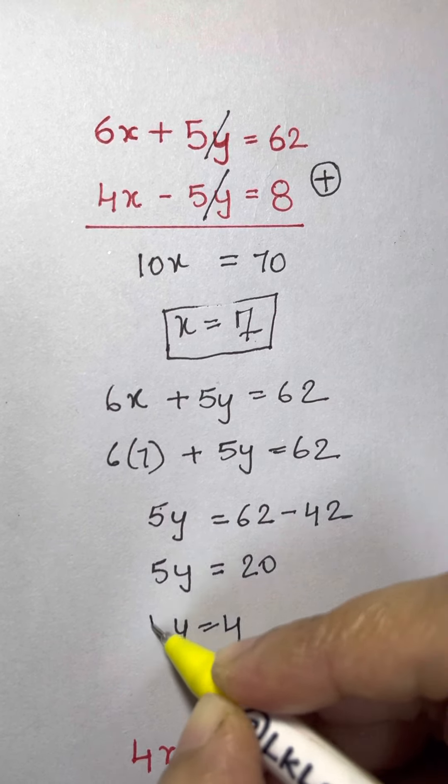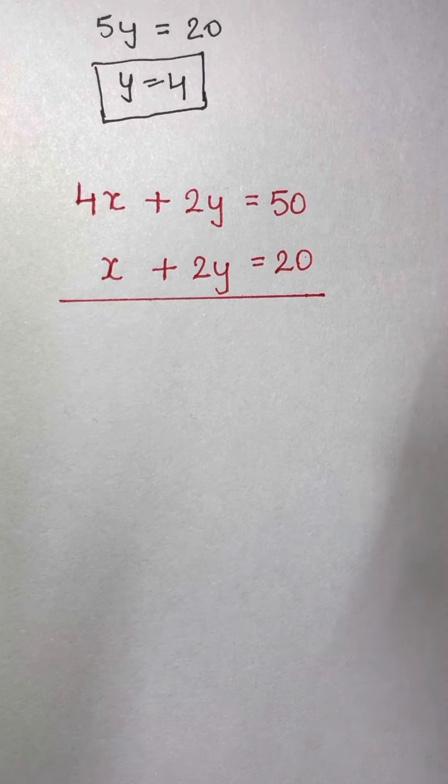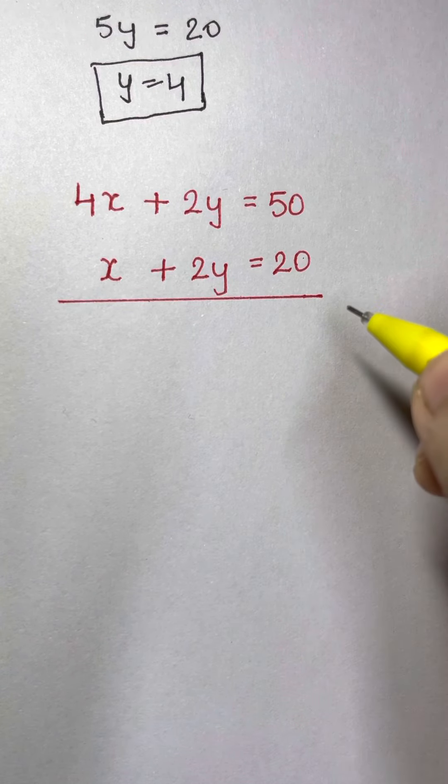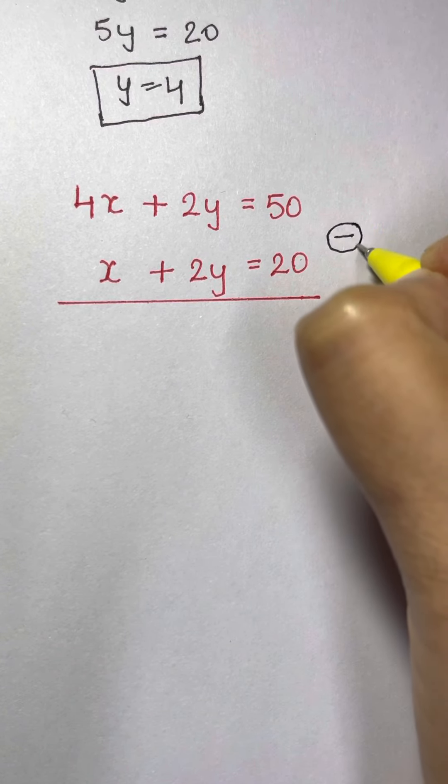Let's see another example. 4x plus 2y equals to 50 and x plus 2y equals to 20. So what are we going to do here? We are going to subtract the equation to eliminate one variable.